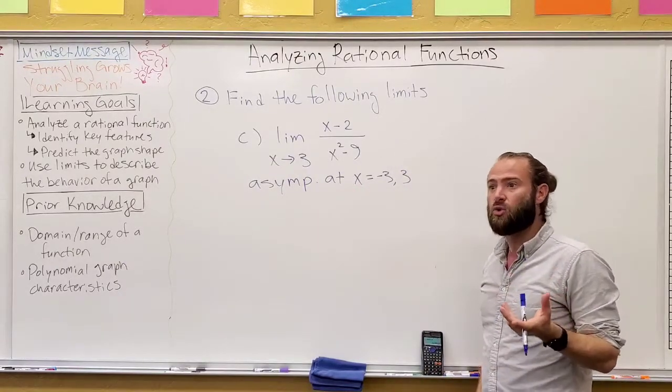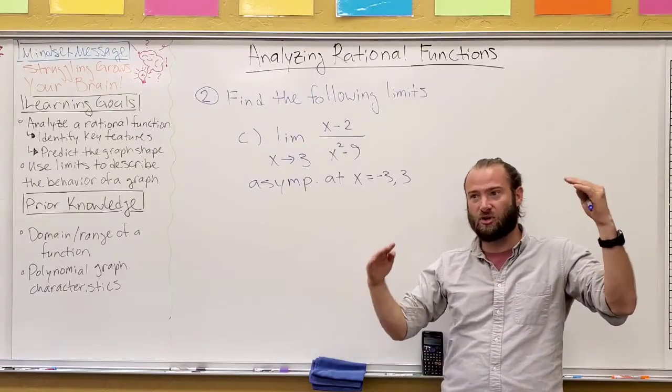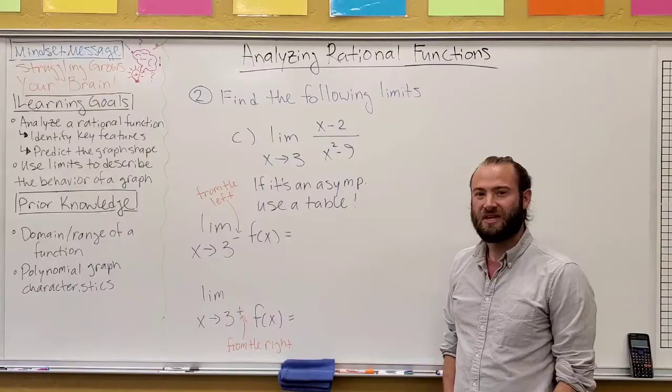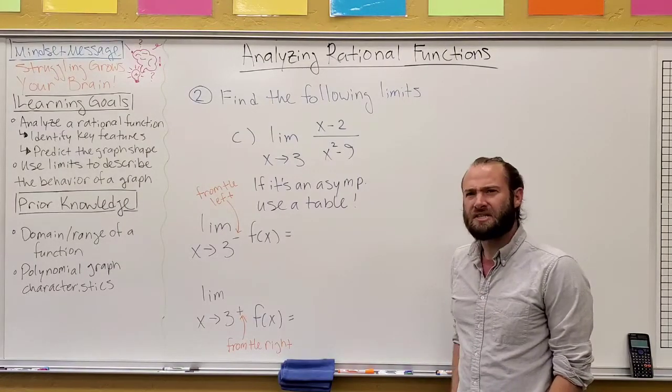But we can't do that anymore if all it has are asymptotes, and it's not a hole. We know that one side of the asymptote goes to negative infinity and the other to positive. But how do we decide which?